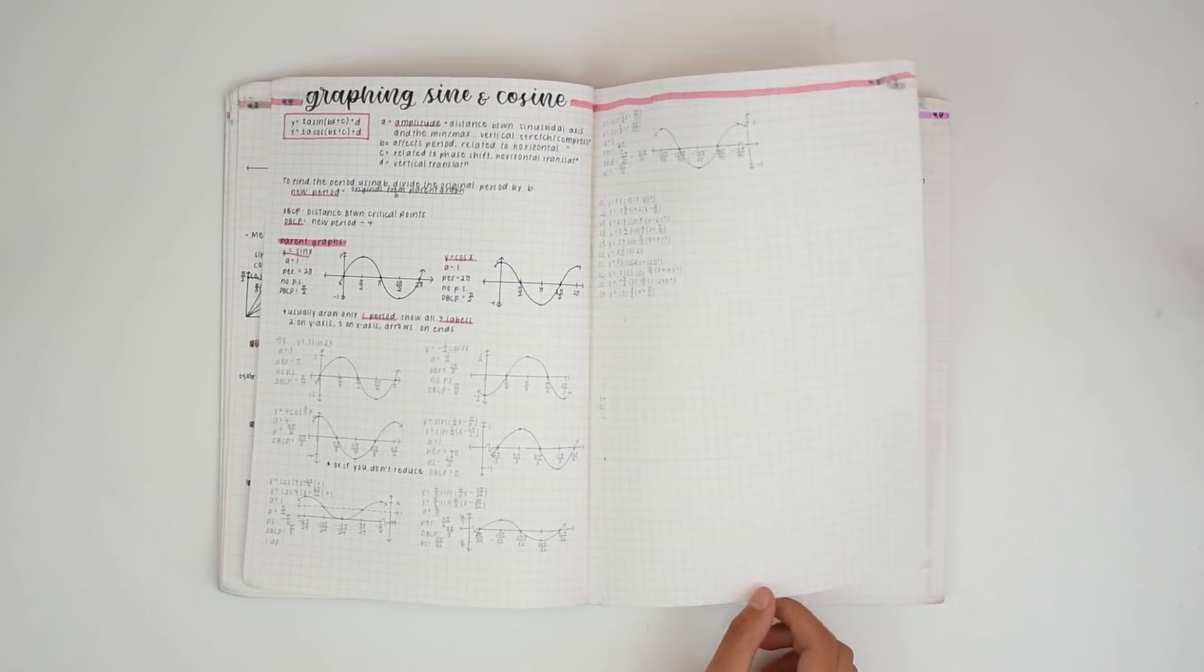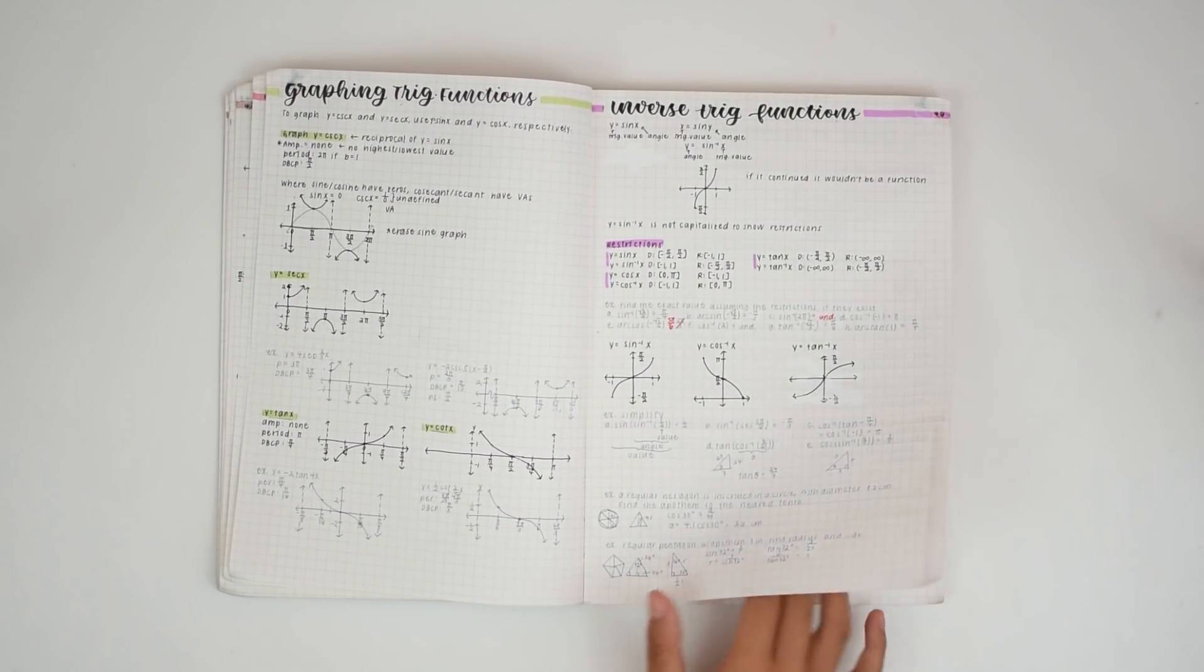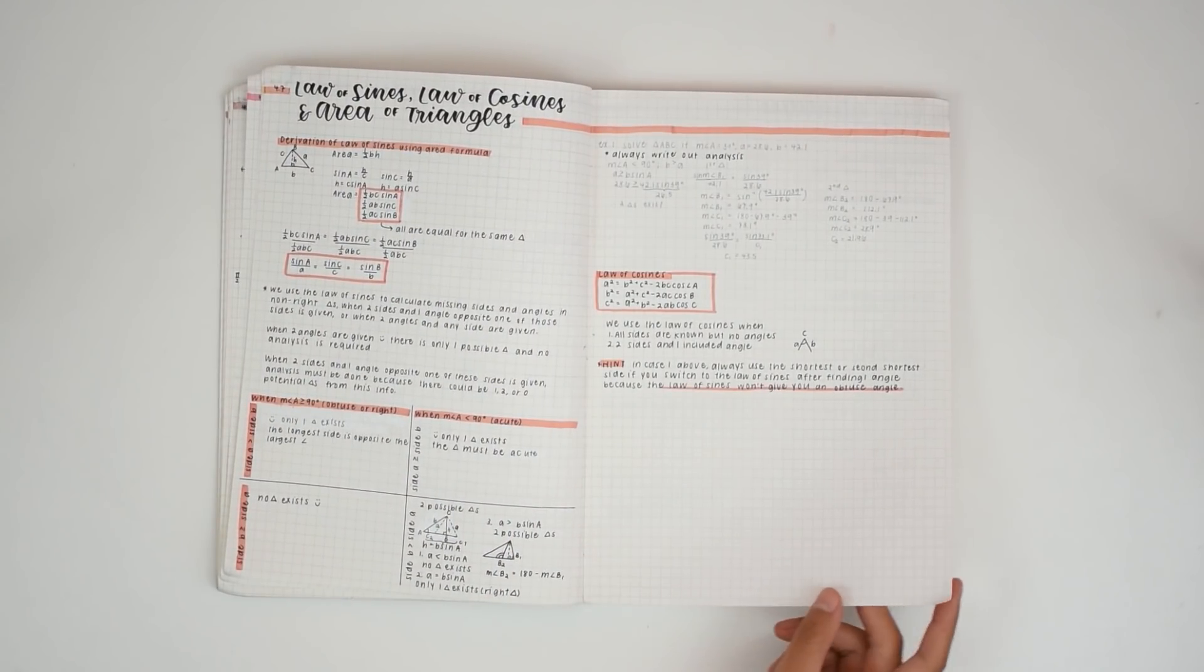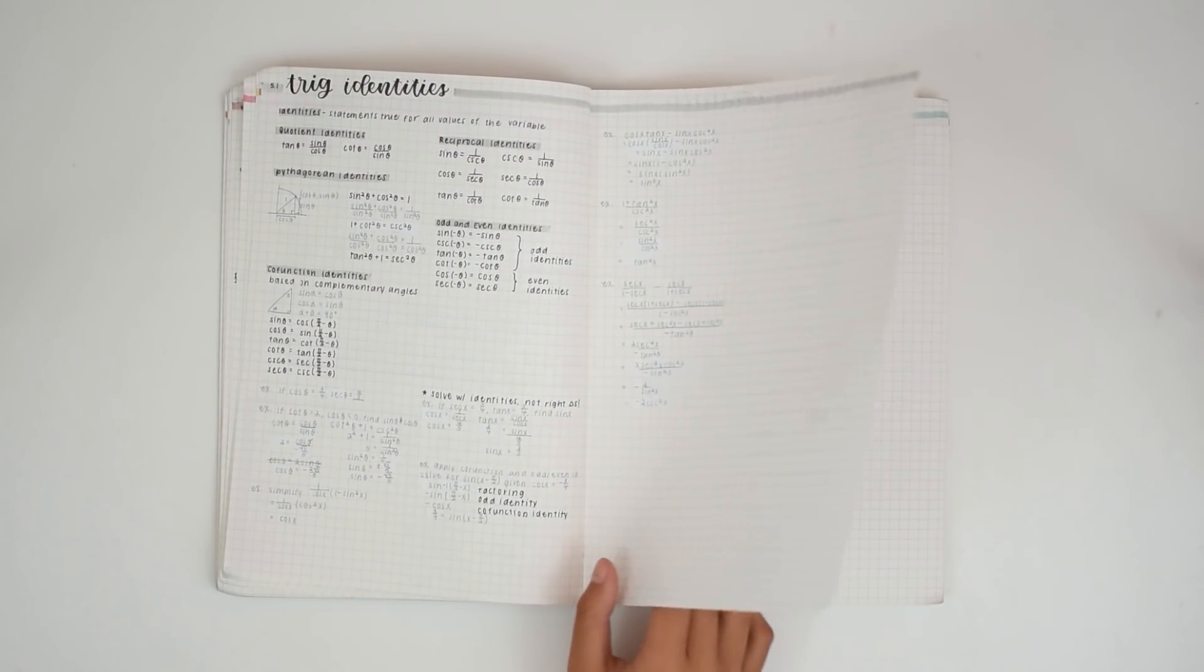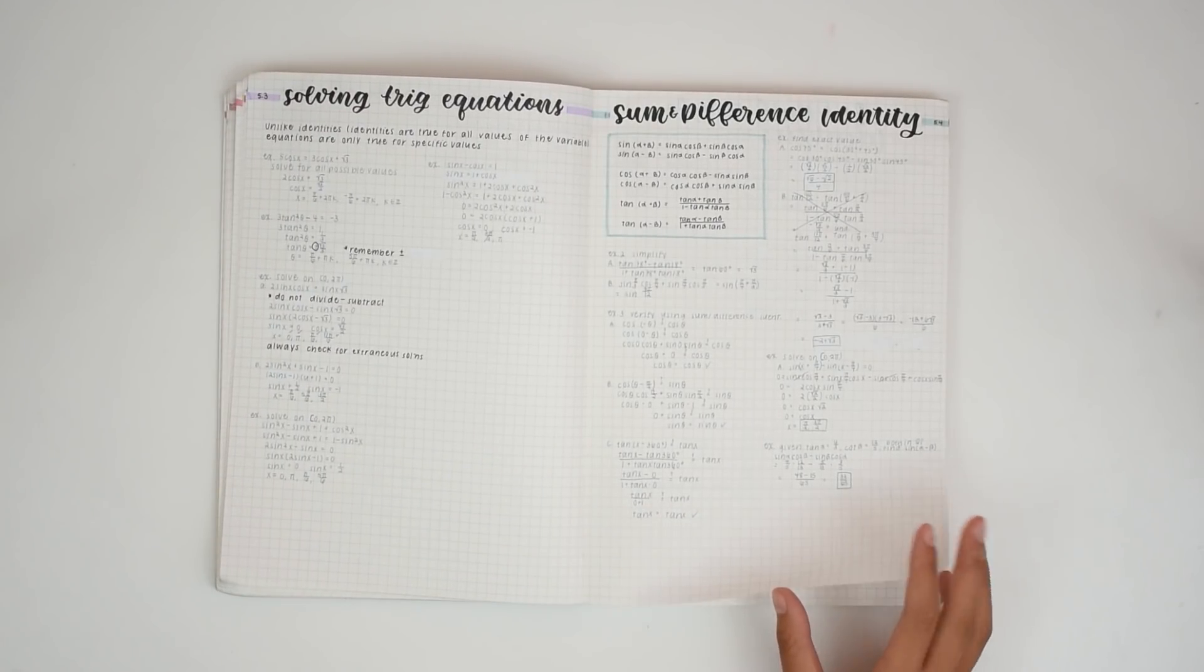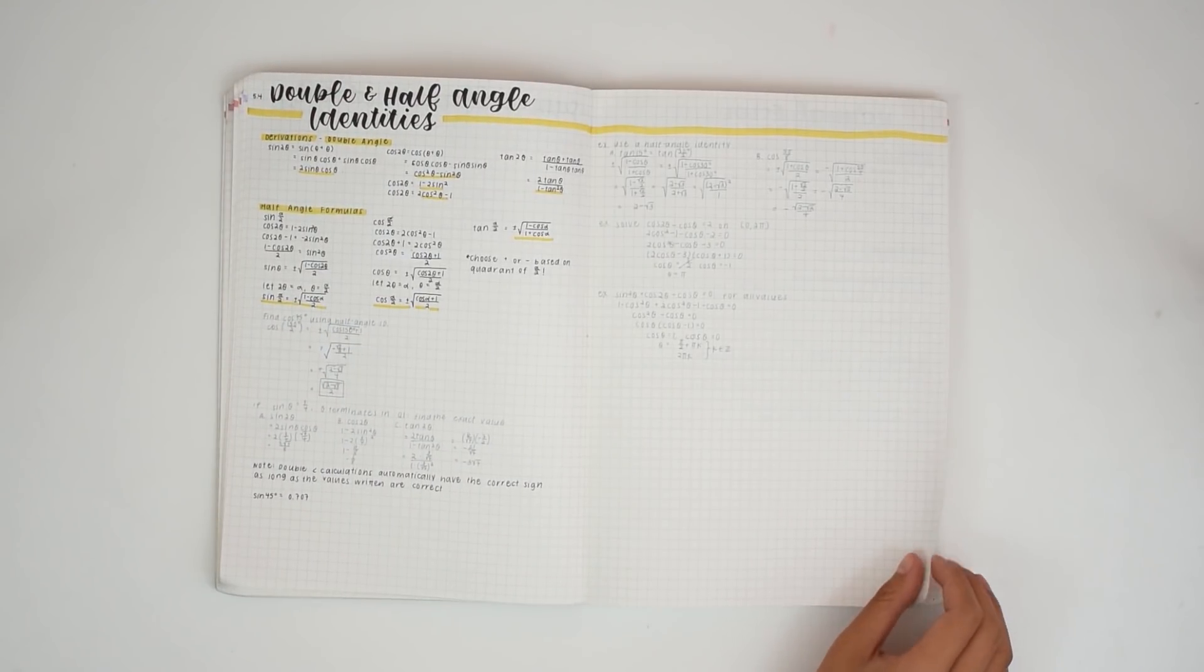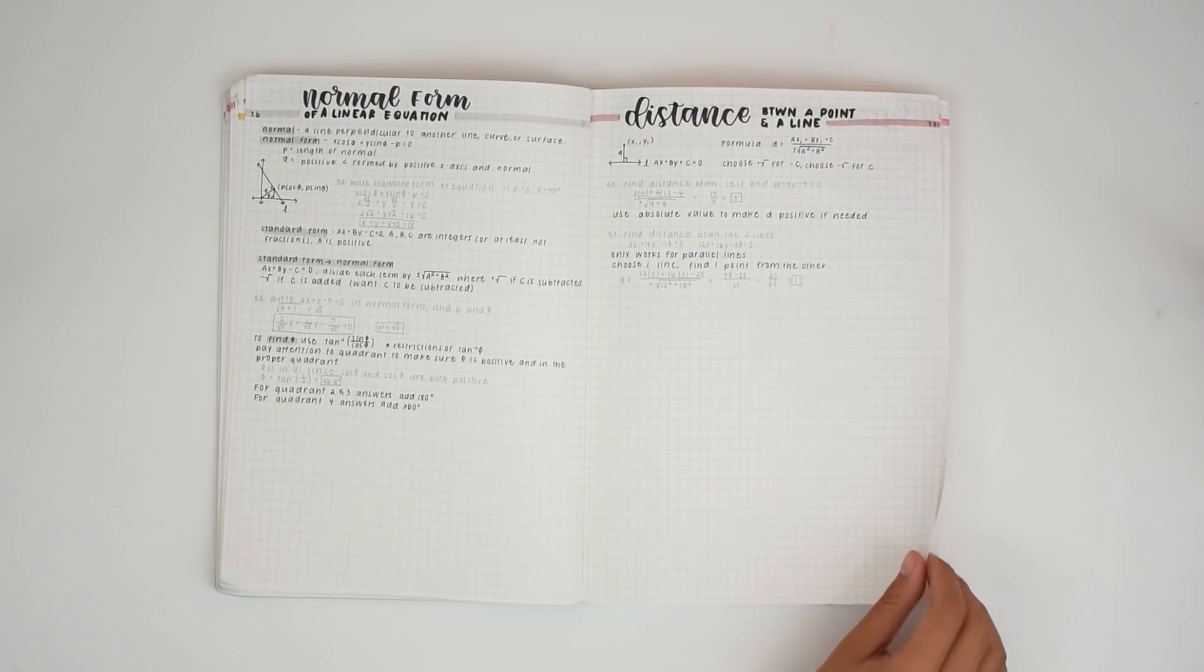And now for the tips part of this voiceover. First of all, the best way to study is first to make sure you understand any concepts and have any formulas memorized, and then just keep doing practice problems. Simply looking over your notes is not enough to study for math because you don't just need to know the information, you have to actually be able to apply it and solve the problem. So you can get practice problems from a website called CUDA software that I used a lot, and also your textbook.